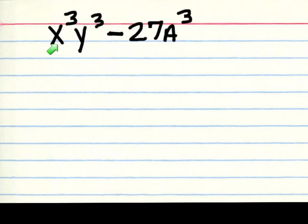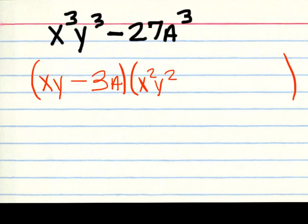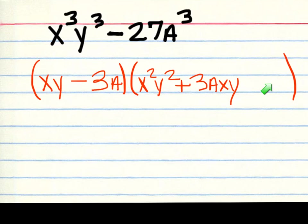On this one, x cubed and y cubed are perfect cubes, so the first half is a perfect cube. We have minus, and 27 is a perfect cube, and a cubed is a perfect cube. The cube root of x cubed is x, and the cube root of y cubed is y. The cube root of 27 is 3, and the cube root of a cubed is a. For the second half, squaring xy gives x squared y squared. Multiplying xy by 3a gives 3axy, written in alphabetical order. Then squaring 3a on the back end gives 9a squared.